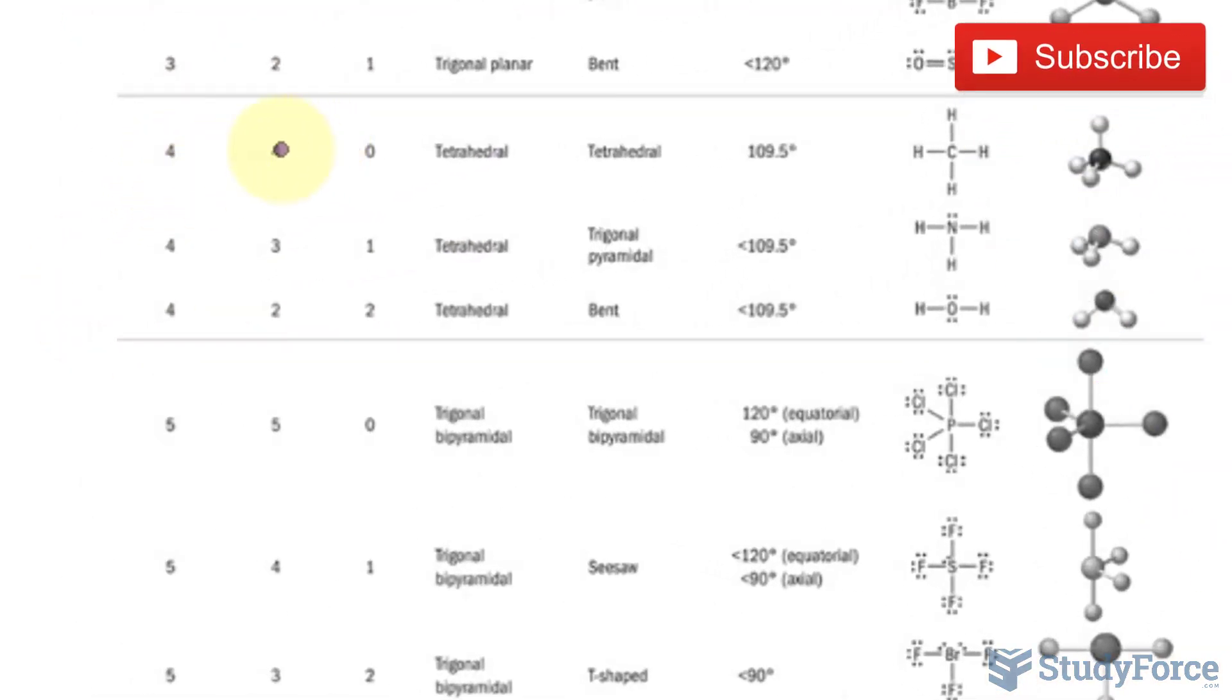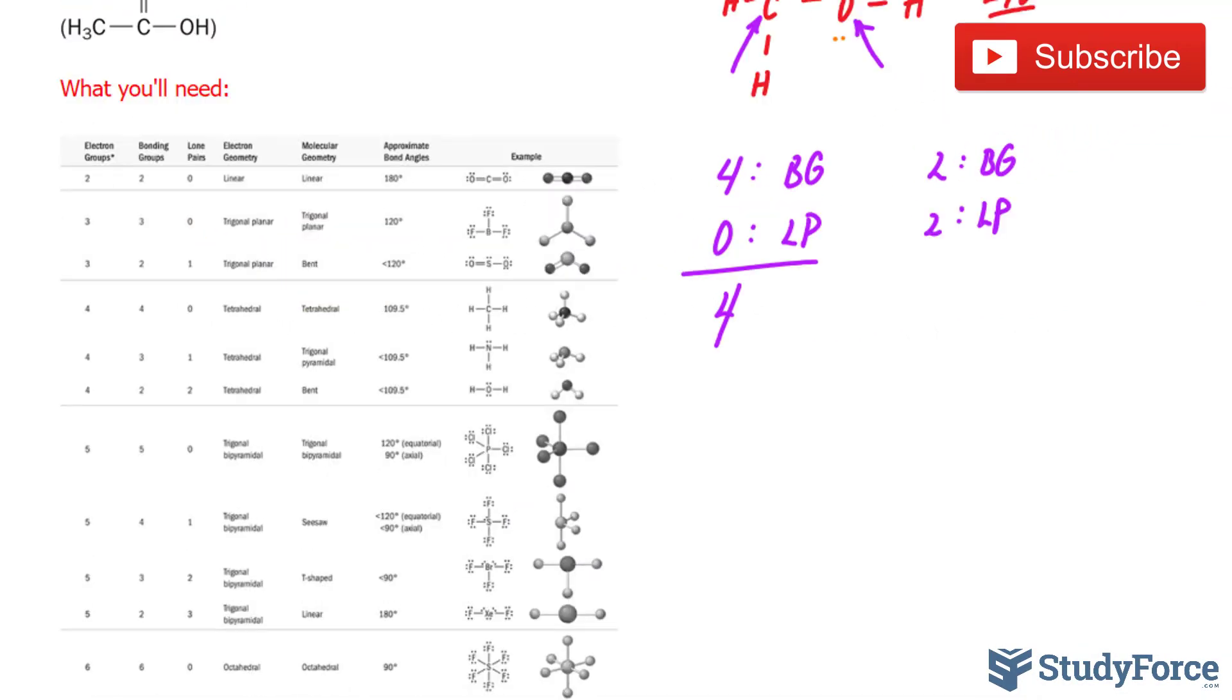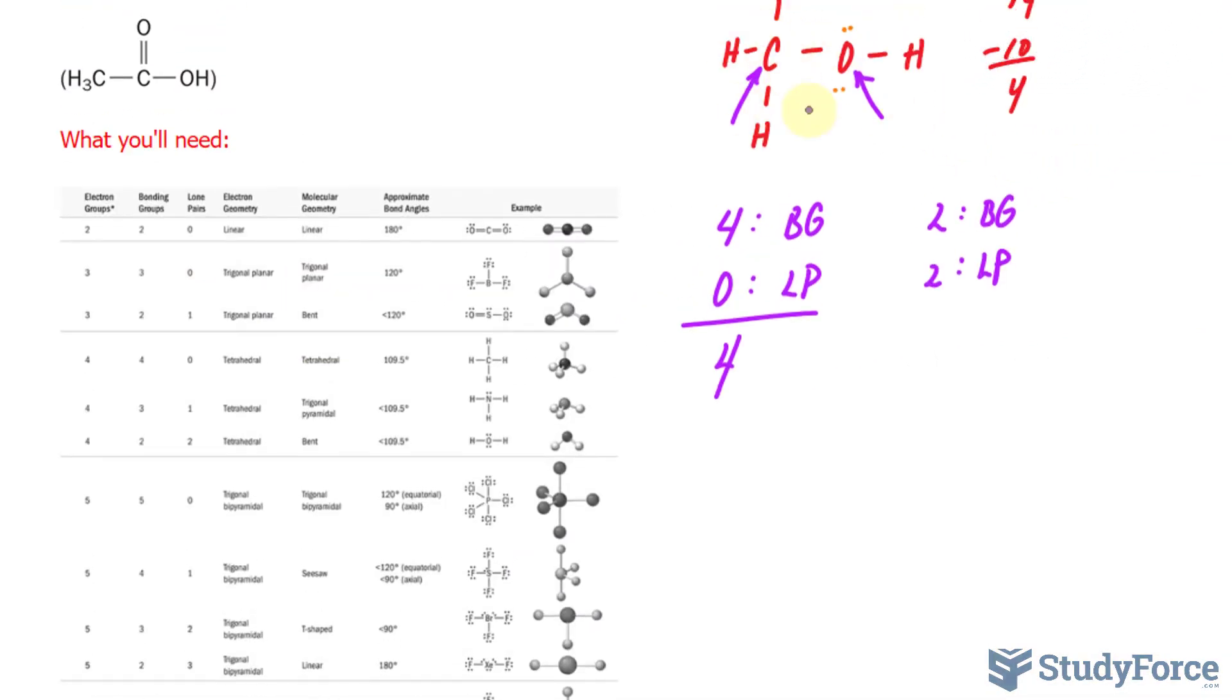Four, and zero. This means that the shape of this atom, and its atoms surrounding it, will produce a tetrahedral. This means that the carbon will be surrounded by atoms that are 109.5 degrees apart.